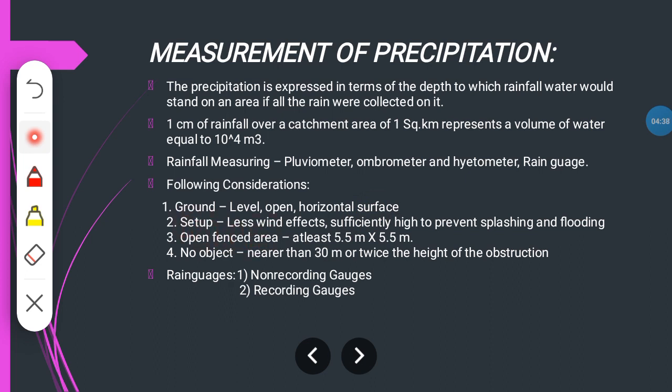The setup of a rain gauge requires a level horizontal surface. Setup should have less wind effects and be sufficiently high to prevent splashing and flooding. The rain gauge should be placed in an open fenced area of at least 5.5 meters by 5.5 meters.